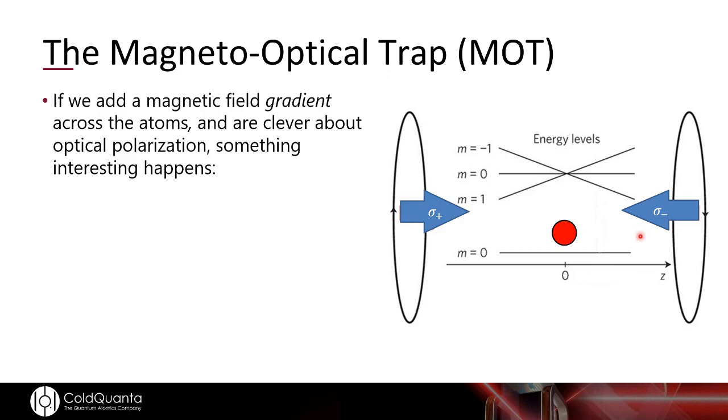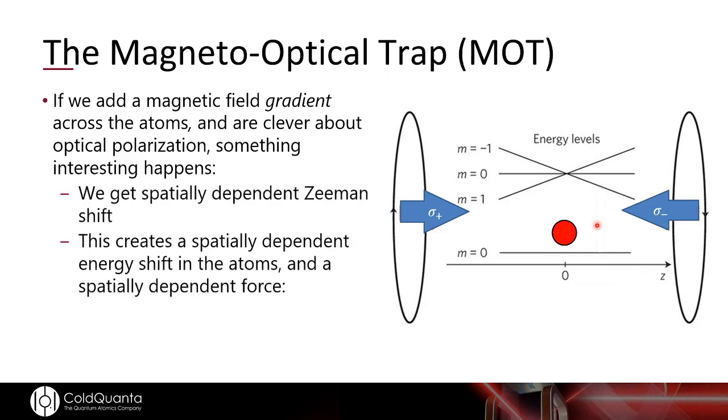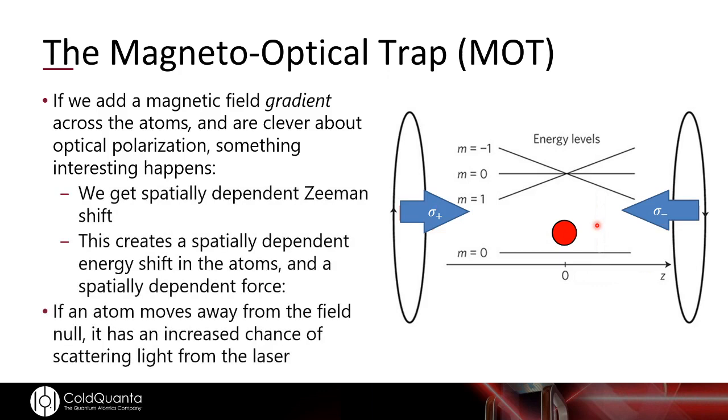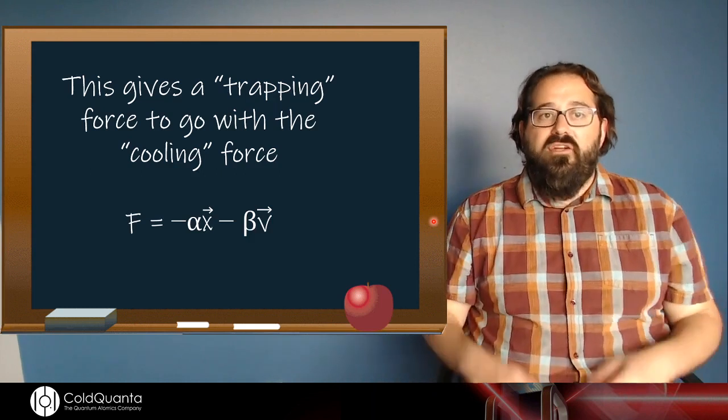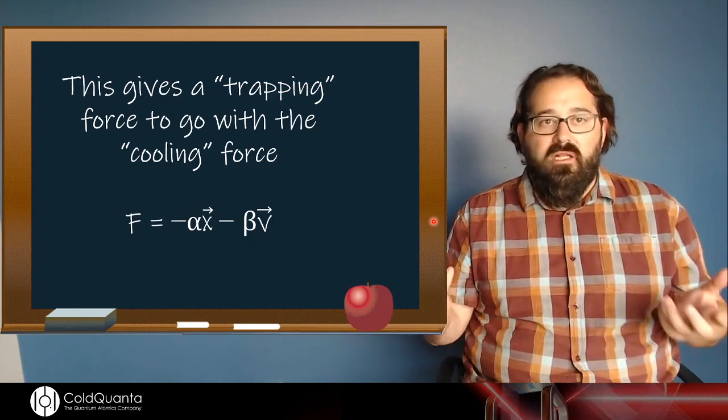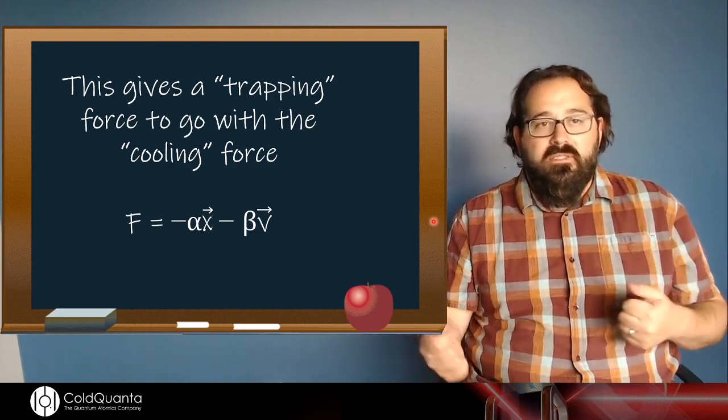So why do we care? Let's suppose that we add a magnetic field gradient across the atoms. And we're going to do something very clever with our polarization states. We're going to make it so that the beam coming from the right imparts minus one unit of angular momentum, and the beam coming from the left imparts plus one unit of angular momentum. So now if my atom moves to this side of the trap, it will tend to preferentially absorb light from the beam that's on the opposite side of the trap from the field zero. And voila! Now we've created a field where we have a trapping force that goes along with the cooling force.